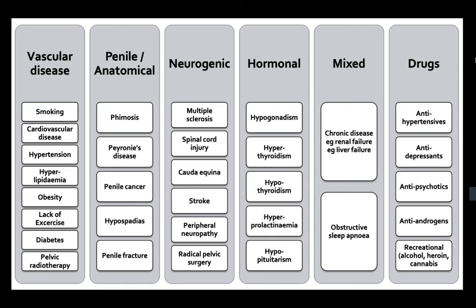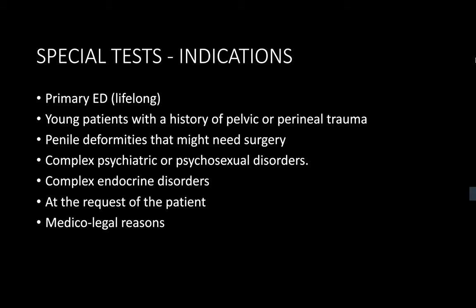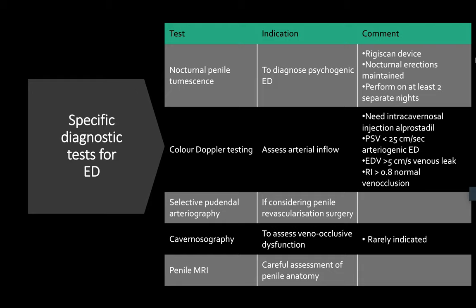Are you aware of any special testing for erectile dysfunction? Imaging can be used in the form of an ultrasound Doppler of the penis, which can detect whether there is an arteriogenic or veno-occlusive cause of erectile dysfunction, depending on the peak systolic velocity and the end-diastolic velocity respectively. In order to determine whether ED is psychogenic, there is also nocturnal penile rigidity testing. What is the role for selective pudendal arteriography? This helps determine whether there is a significant arterial cause and can allow for potential revascularization at the same time if discovered.